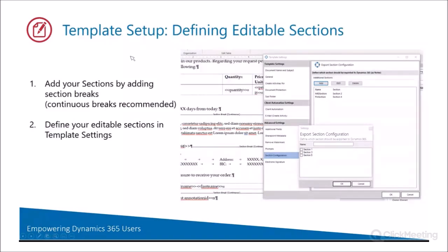Let's talk about our template setup. Basically what we're doing here is we have to define editable sections — it's really easy. You can do this on any new Documents Core Pack template that you have, as well as anything that you already have existing. You add sections by adding section breaks. Continuous section breaks are recommended when doing this. Then you define your editable sections in the template settings. This will all make more sense once we go into the demo.